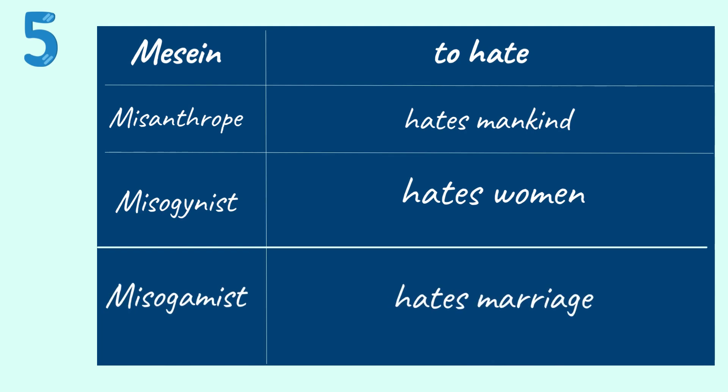The fifth root word is Misan, meaning to hate. There are 3 words related to Misan: Misanthrope — a person who hates mankind; Misogynist — a person who hates women; Misogamist — a person who hates marriage. I hope you are clear on the root word Misan and the related words misanthrope, misogynist, and misogamist.